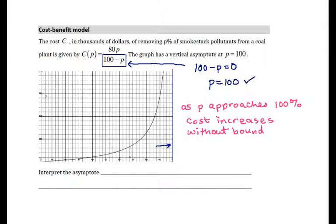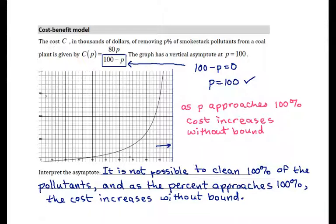Which tells us that it's not possible to clean up 100 percent from this coal plant. Not possible to clean up 100 percent, but as we try to get closer and closer, the cost increases without bound. So we can put all of that in our interpretation. It is not possible to clean 100 percent of the pollutants, and as the percent we try to clean approaches 100 percent, our cost increases without bound. So we have to decide at what point we're going to stop and say that it's enough or that it's all we can afford. We know we're not going to get 100 percent.